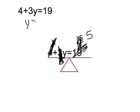I can always go back and double check by plugging it into my equation. So 4 plus 3 times 5 should equal 19. 3 times 5 is 15. 16, 17, 18, 19. Yep, I solved it correctly.